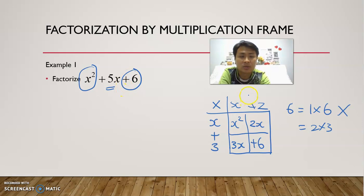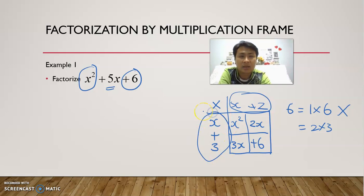So the result is: x² + 5x + 6 = (x + 2)(x + 3).